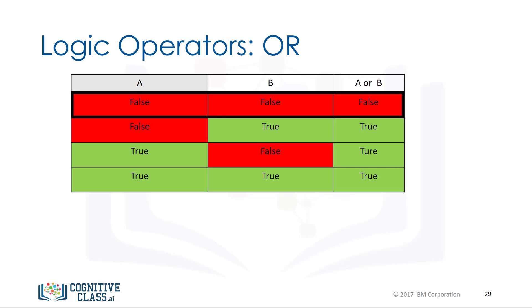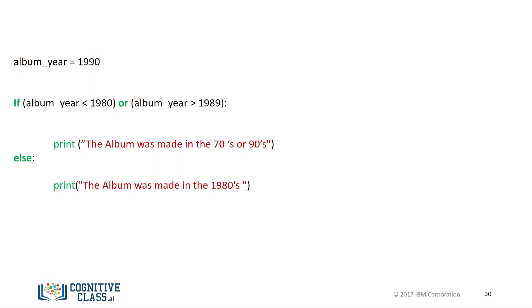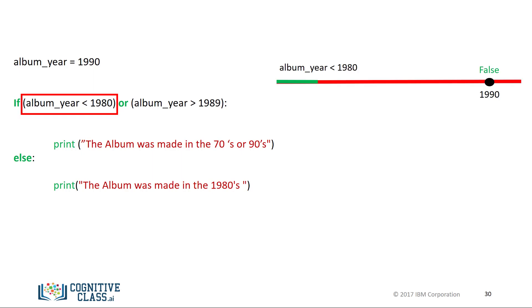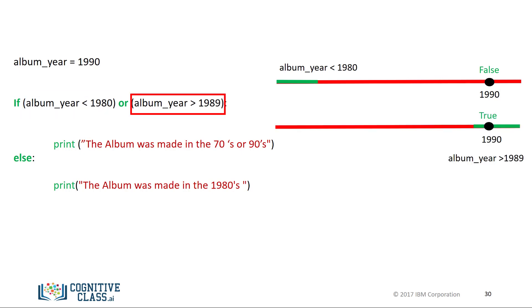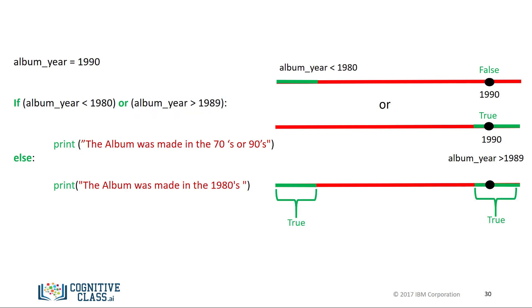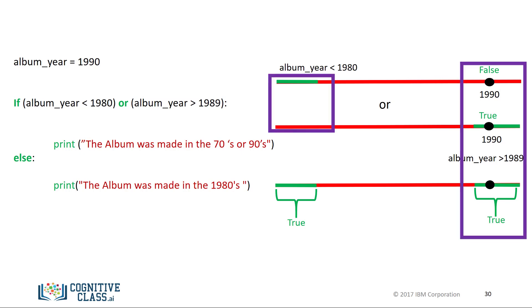The OR operator only produces a FALSE if all the boolean values are FALSE. The following lines of code will print 'this album was made in the 70s or 90s' if the variable ALBUM_YEAR does not fall in the 80s. Let's see what happens when we set the ALBUM_YEAR to 1990. The colored number line is green when the condition is true and red when false. In this case, the condition is true. Examining the second condition, 1990 is greater than 1989, so that condition is also true. In the final number line, the green region indicates where the combined condition is true — corresponding to where at least one statement is true. We see that 1990 falls in that area, so we execute the statement.